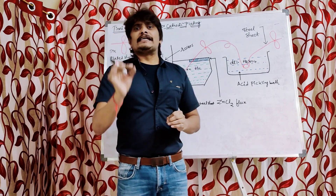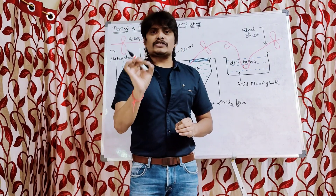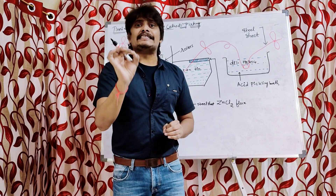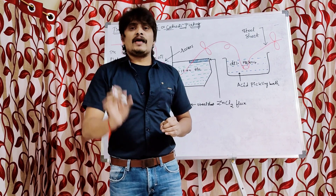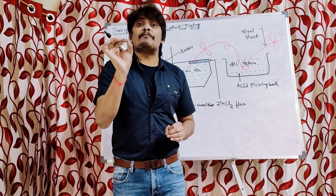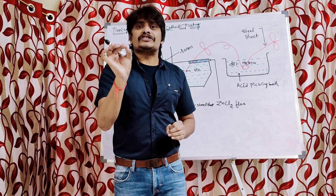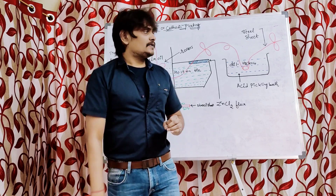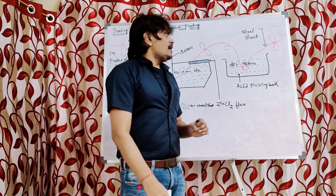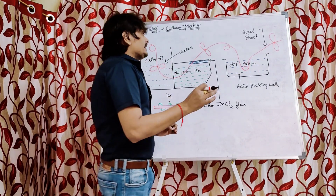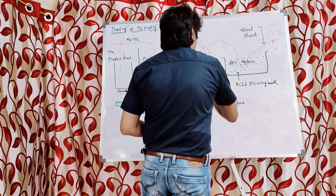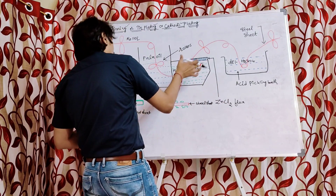Simply put, the process of coating tin on the surface of the base metal is called the tinning process, which is part of the hot dipping method, which is one of the corrosion controlling methods. Now let us see the process involved in tinning.